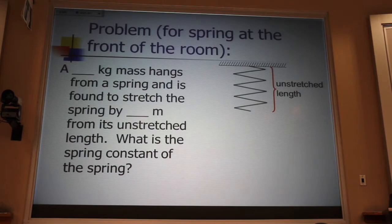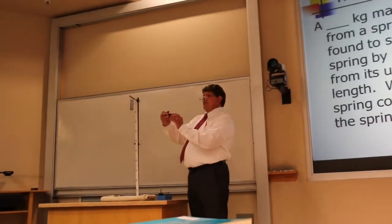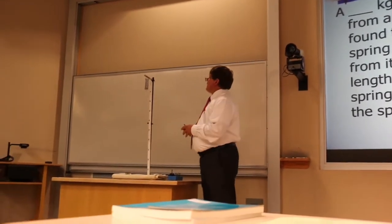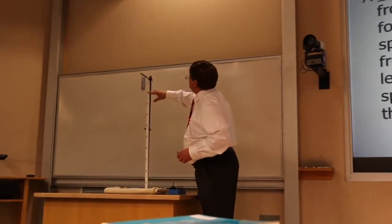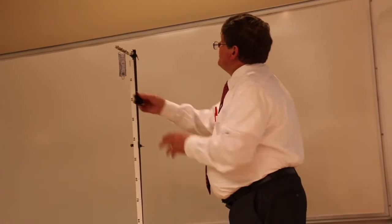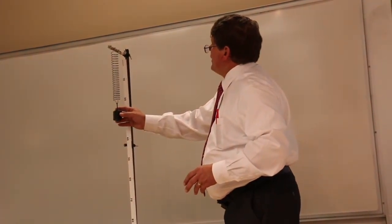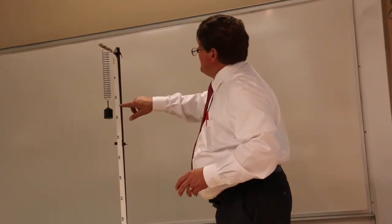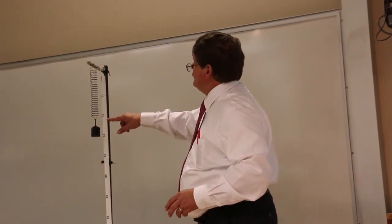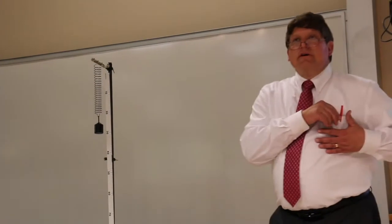I put a spring on that support, and I take a 500 gram mass, half a kilogram. Now, without the mass, the bottom of that spring is right about 10 centimeters on this scale. When I put this mass on here, it stretches the spring. Now the bottom of the spring is right at about 22 centimeters. So it stretches at 12 centimeters.